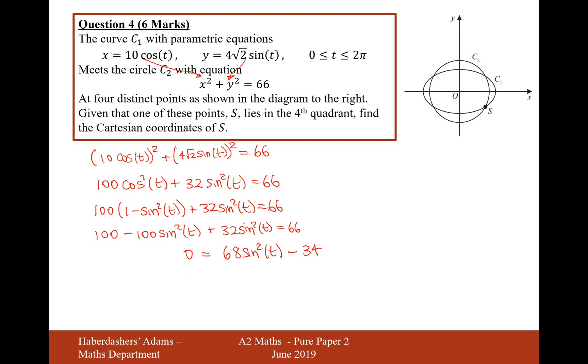Okay, let's divide by 34 here because I think both of those numbers are a factor of 34. So it's 2 sine squared t minus 1. So let's now move those two numbers onto the other side, so it would be 1 half equals sine squared t.